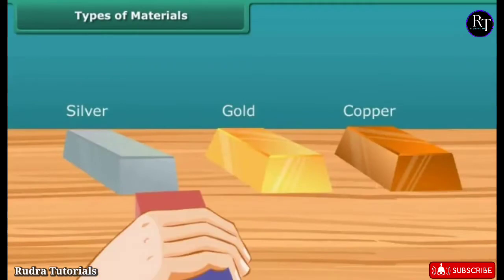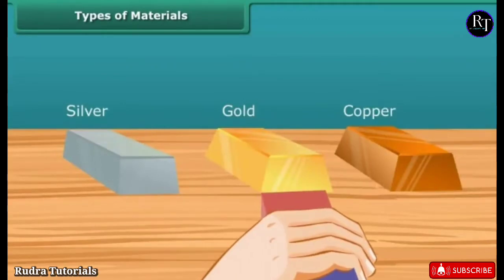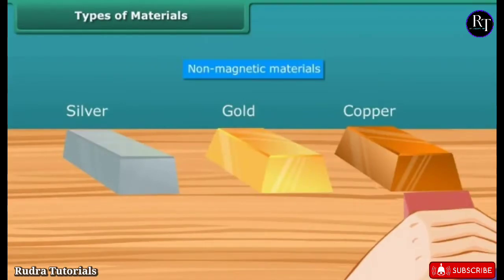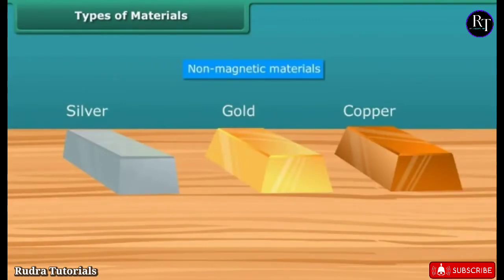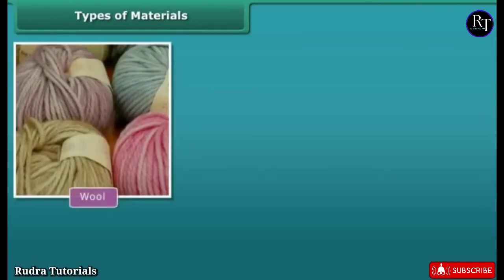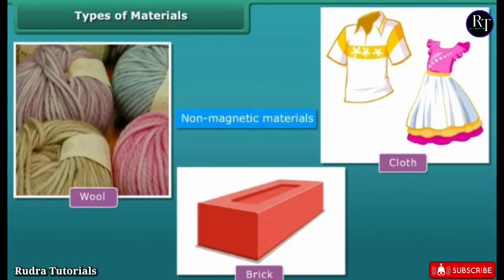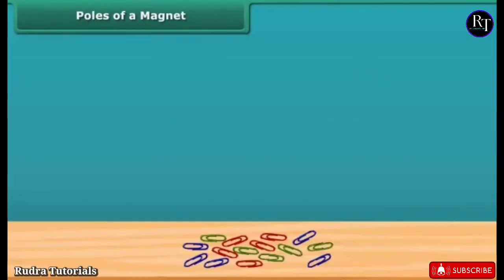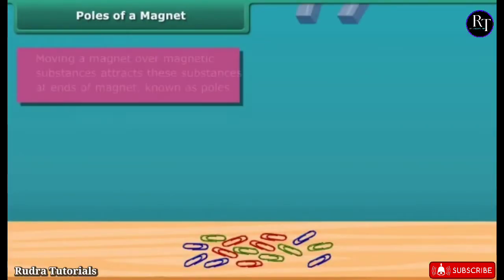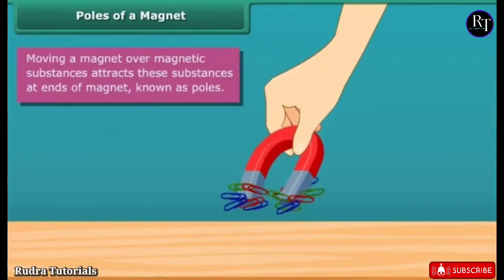Materials that are not attracted by magnets are called non-magnetic materials. For example, wool, cloth, and bricks are non-magnetic materials. Poles of a magnet — when you move a magnet over magnetic substances, you will see that these substances get attracted to particular parts of the magnet only.